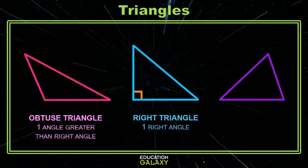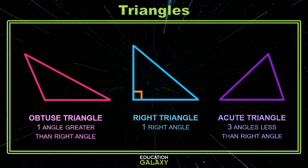What happens on the right here? We have three acute angles. This is called an acute triangle.